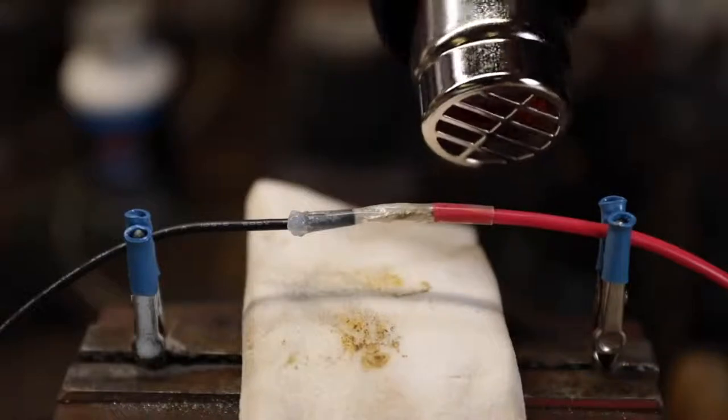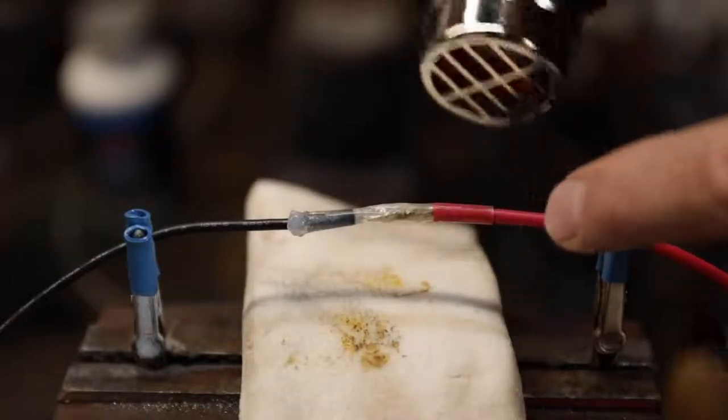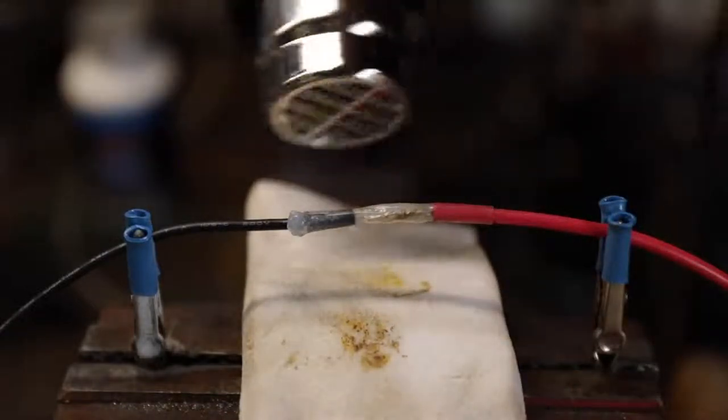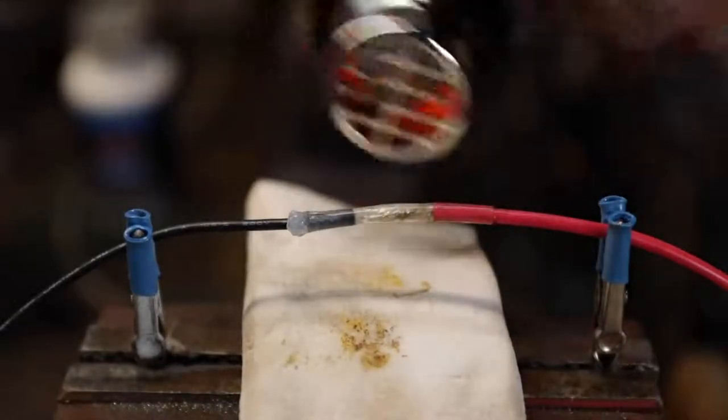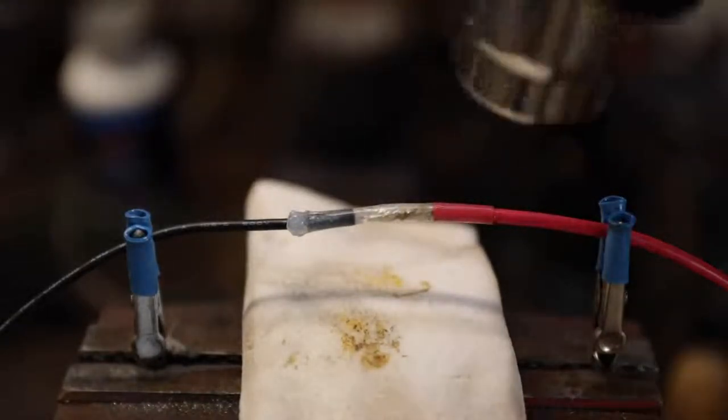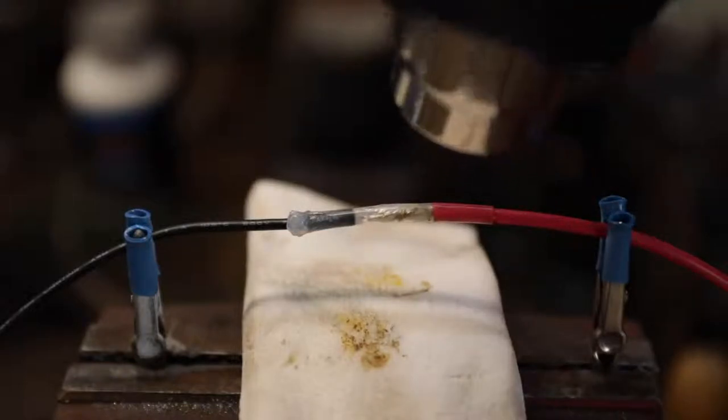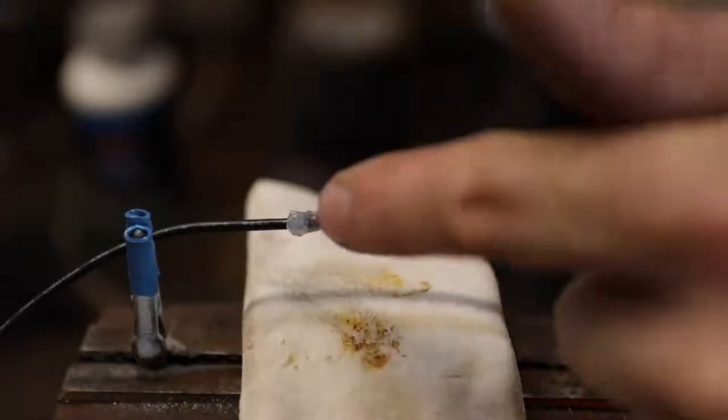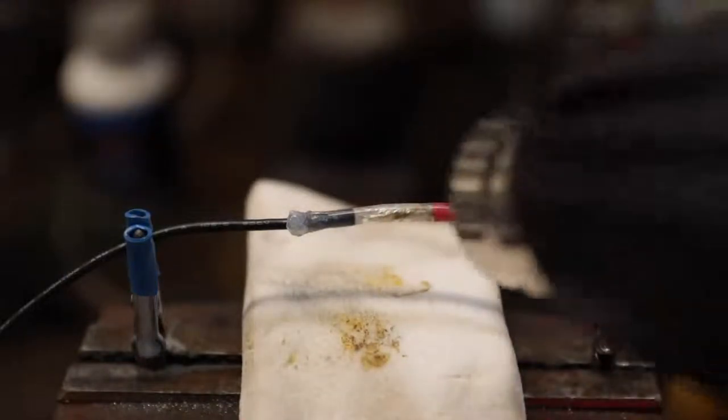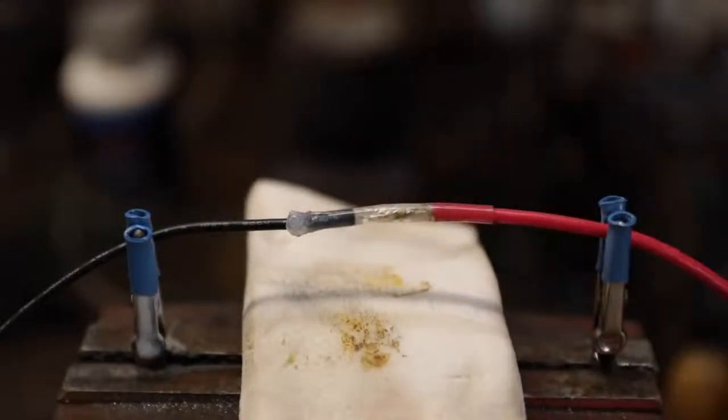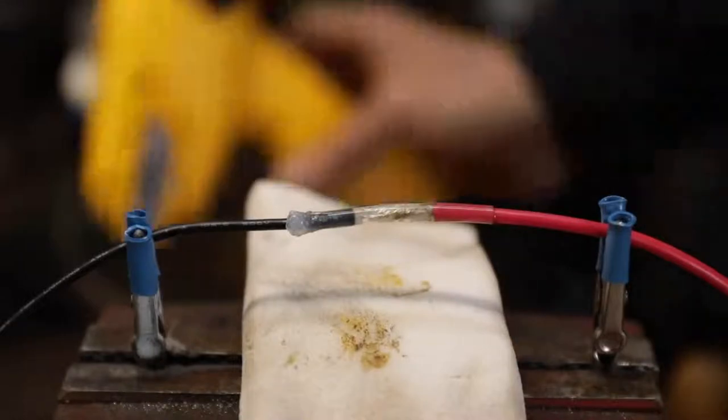You'll see that silicone making that seal as the shrink tape tightens around the connection. Ideally you want it to squeeze out like that. That side right there probably should have put a little bit more on the housing, but that looks pretty good right there actually.